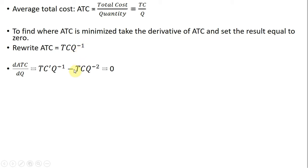So bringing down the minus one in front, that's where this minus is coming from. And then Q raised to the minus one, minus one leaves us with Q raised to the minus second power. And again, all that is equal to zero.